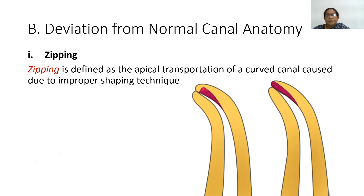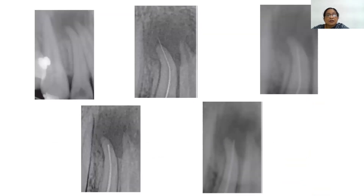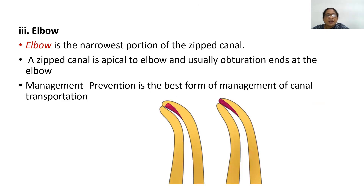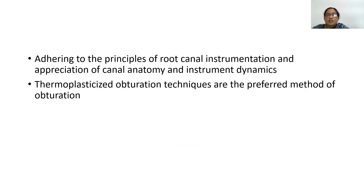Deviation from normal canal anatomy includes zipping. Zipping is defined as apical transportation of a curved canal caused by improper shaping technique. Transportation occurs when the instrument remains within the canal confines, producing internal transportation of the foramen; if outside the confines, it produces external transportation. An elbow is the narrowest portion of a zipped canal — a zipped canal is apical to the elbow, and obturation ends at the elbow. Prevention is the best management: adhere to principles of root canal instrumentation and appreciate canal anatomy and instrument dynamics. Thermoplasticized obturation techniques are the preferred methods.